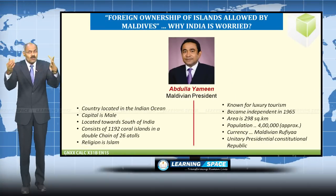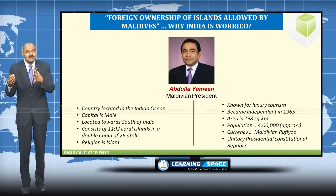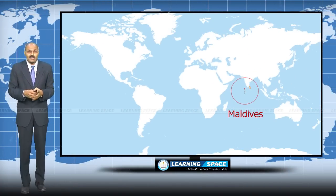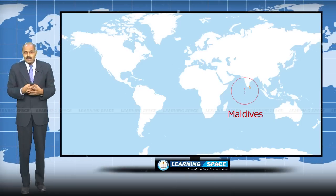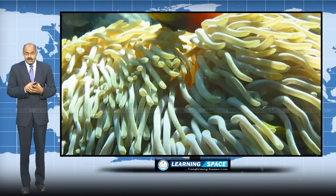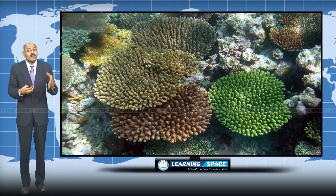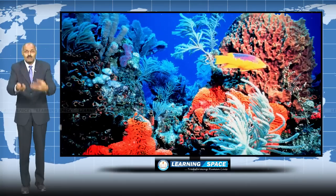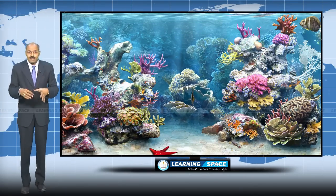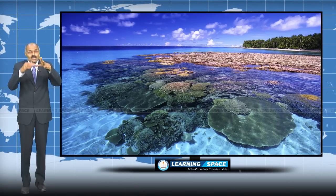The first issue is foreign ownership of islands allowed by Maldives. Before going into detail, let us look at the country. Maldives is situated slightly southwest of India and is composed of several coral islands. Coral is a marine invertebrate that secretes calcium carbonate, forming coral reefs. Please look at these pictures — the coral reefs are beautiful because of the solidification of calcium carbonate.